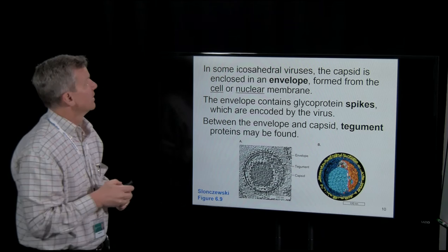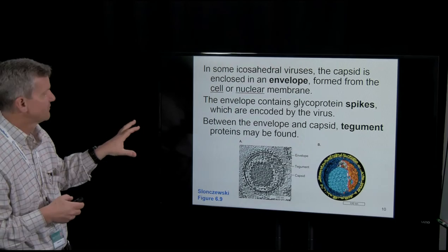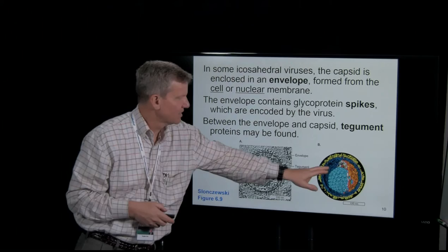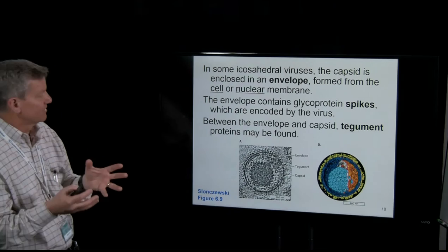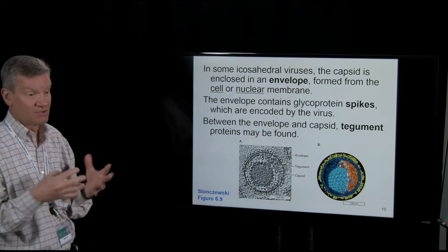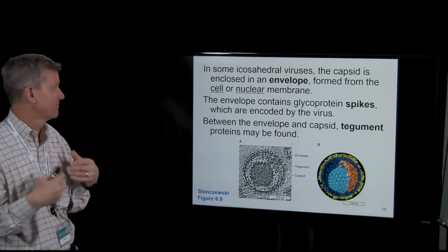Here's another example of an icosahedral virus — herpes virus. There are glycoprotein spikes in yellow on the outside, then something called a tegument, which is somewhat unique to herpes viruses. The capsid inside protects the nucleic acid. In the case of herpes, the nucleic acid is double-stranded DNA, just like our cellular double-stranded DNA.